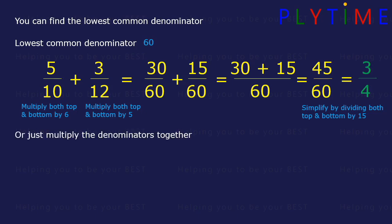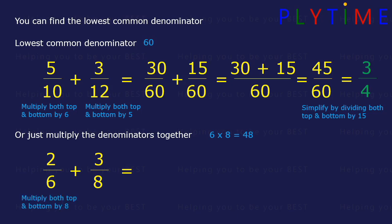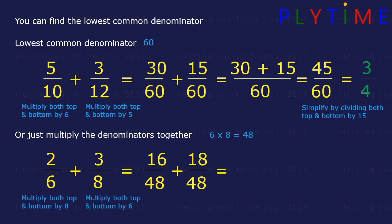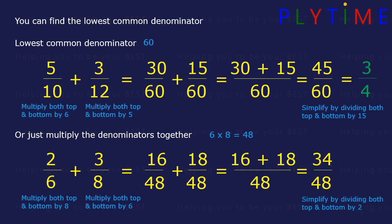Or we could just multiply the denominators together. For 2 sixths plus 3 eighths, if we multiply the denominators, 6 times 8 is 48, so we'll use that as our common denominator. To change from sixths, we multiply the top and the bottom by 8, giving 16 over 48. And to change from eighths, we multiply the top and the bottom by 6, so we end up with 18 over 48. Now we can add them together: 16 plus 18 equals 34, so 34 over 48. We can simplify this by dividing both the top and the bottom by 2, and we end up with 17 over 24.